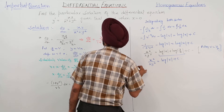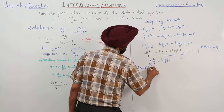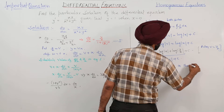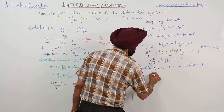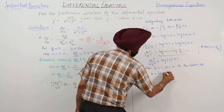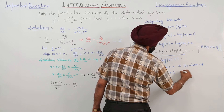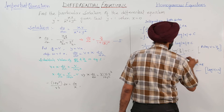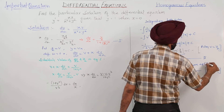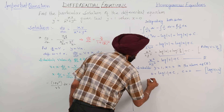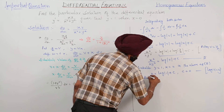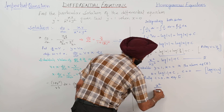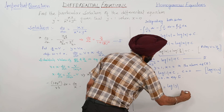Now substituting the initial condition y = 1 and x = 0 into the equation: 0 = log(1) + C, so C = 0 since log(1) = 0. Putting C = 0, we get the final answer: x²/(2y²) = log y.